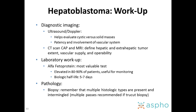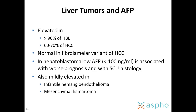Pathology is critical. Usually you do a biopsy or an upfront resection, but if you do a core-needle biopsy, do multiple passes because the pathology can be patchy and you want to identify the different components. AFP is elevated in greater than 90% of hepatoblastomas, around 60% to 70% of hepatocellular carcinomas, but could be normal in the fibrolamellar variant of HCC. In hepatoblastoma, a low AFP — less than 100 — is associated with worse prognosis and with small-cell undifferentiated histology. AFP can also be elevated in benign tumors like infantile hemangioendothelioma and mesenchymal hamartoma.